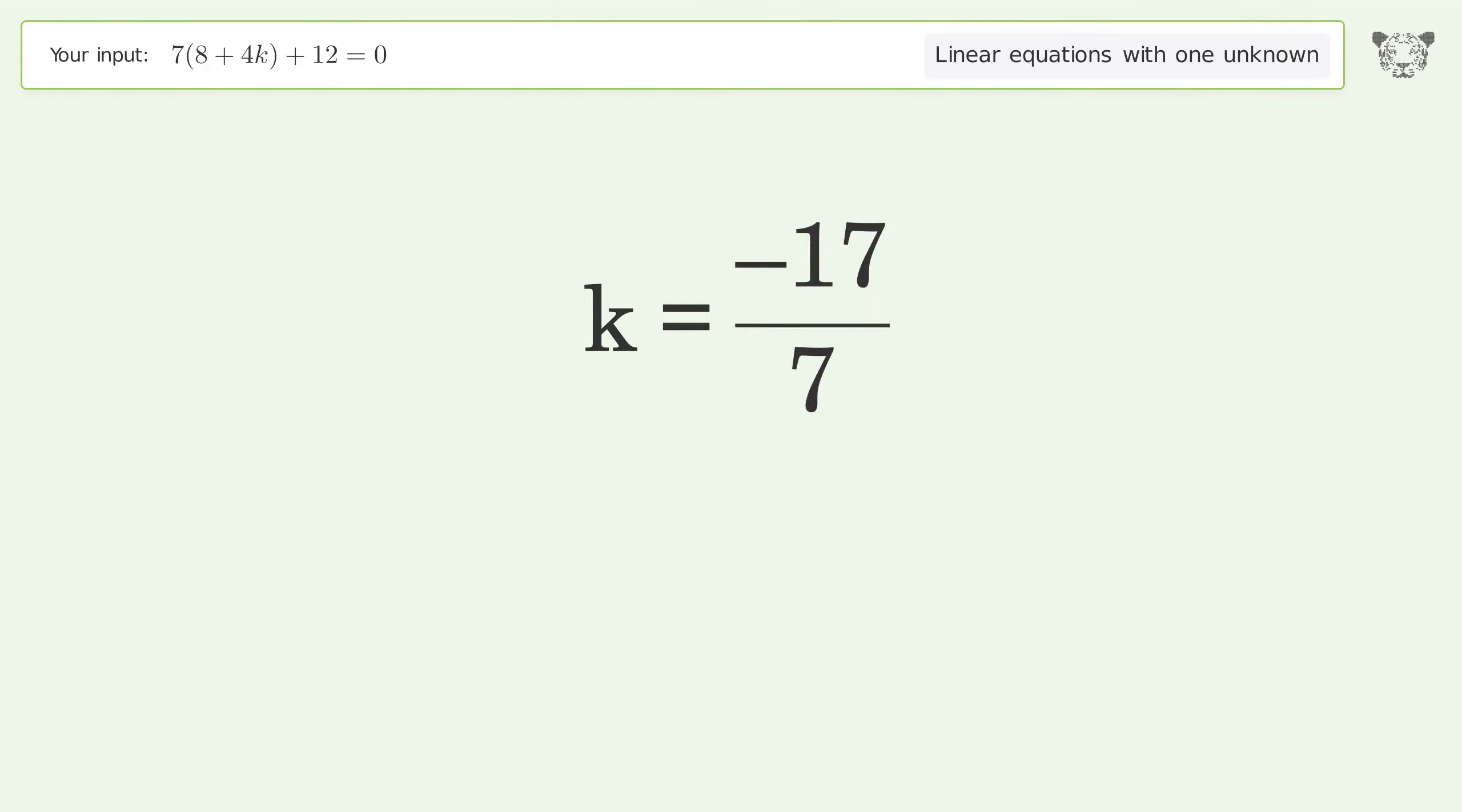And so the final result is k equals negative 17 over 7.